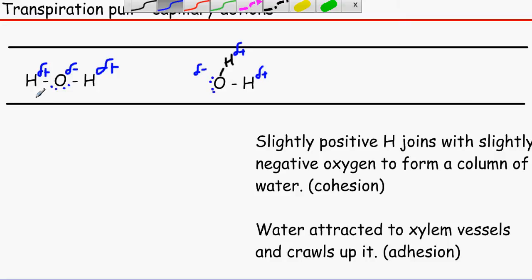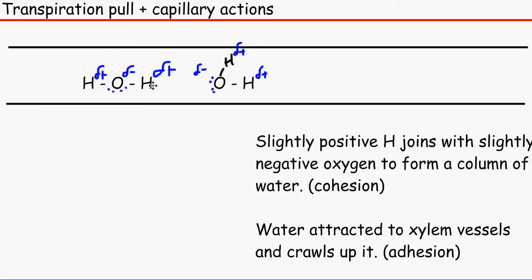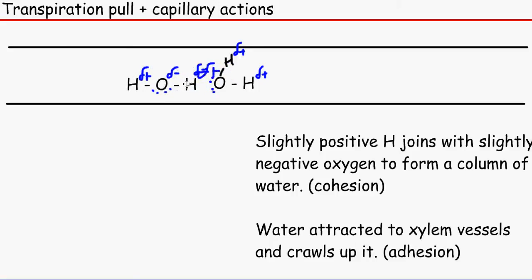But you do need to know the hydrogen has a slightly positive charge and the oxygen has a slightly negative charge. As you remember from year five, positives and negatives attract. So what happens is this slightly positive hydrogen joins with this slightly negative oxygen, and that is called cohesion. There are lots and lots of water molecules joining constantly, and that forms a column of water up the xylem.